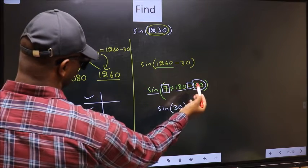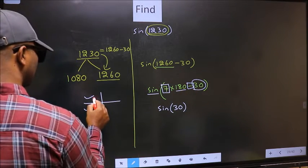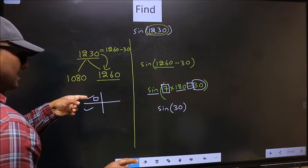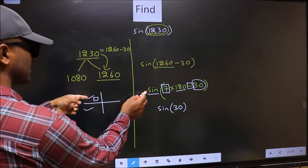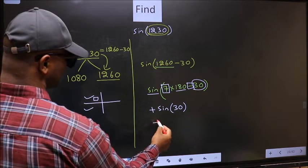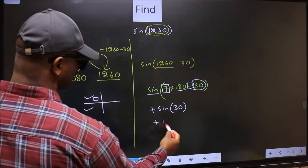Here we have negative. That means the angle lies in the second quadrant. And in the second quadrant, sin is positive. So we should put plus. So plus sin(30) is 1/2.